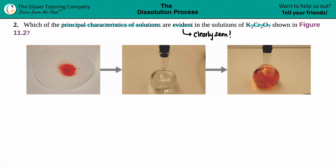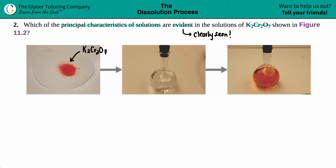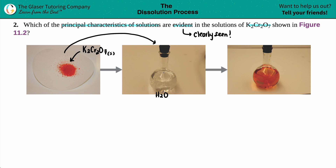In this example, we have this solid with a nice orange color — that's the potassium dichromate, K₂Cr₂O₇. It's clearly a solid, so we mark it as (s). The arrow indicates we're going to pop off the cap and throw it into this glass, which is clearly H₂O — we're dissolving potassium dichromate into water. The water at this stage is a liquid.